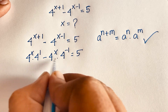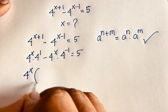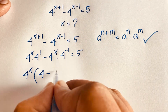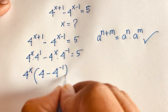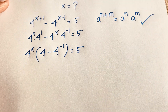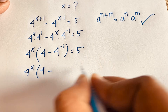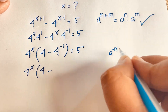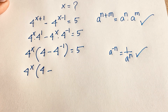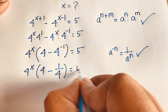Now, you can see that 4 to the power x is common. So factoring out 4 to the power x, we get 4 to the power x times (4 minus 4 to the power minus 1) equals 5. We know that a to the power minus n equals 1 over a to the power n. So according to this law, 4 to the power minus 1 equals 1 over 4. So we have 4 to the power x times (4 minus 1/4) equals 5.